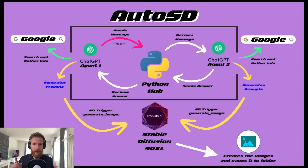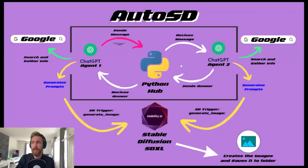First let me show you how the AutoSD system works. In the square here we have our Python hub and our two ChatGPT agents, Agent 1 and Agent 2. When they get the trigger message they will start simulating a conversation on how they can get the best prompt for Stable Diffusion. As you can see on the right side of the square, they have access to Google.